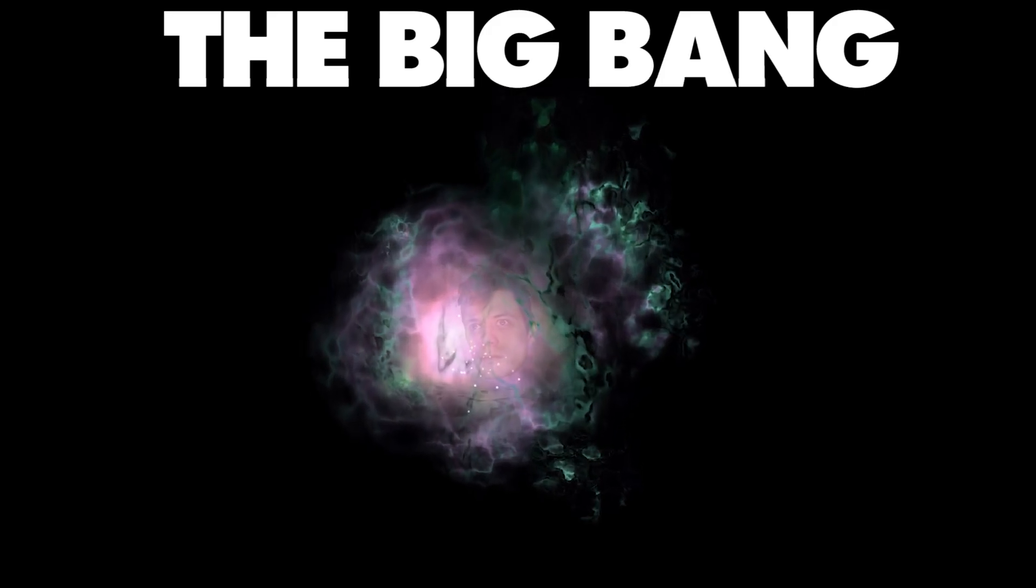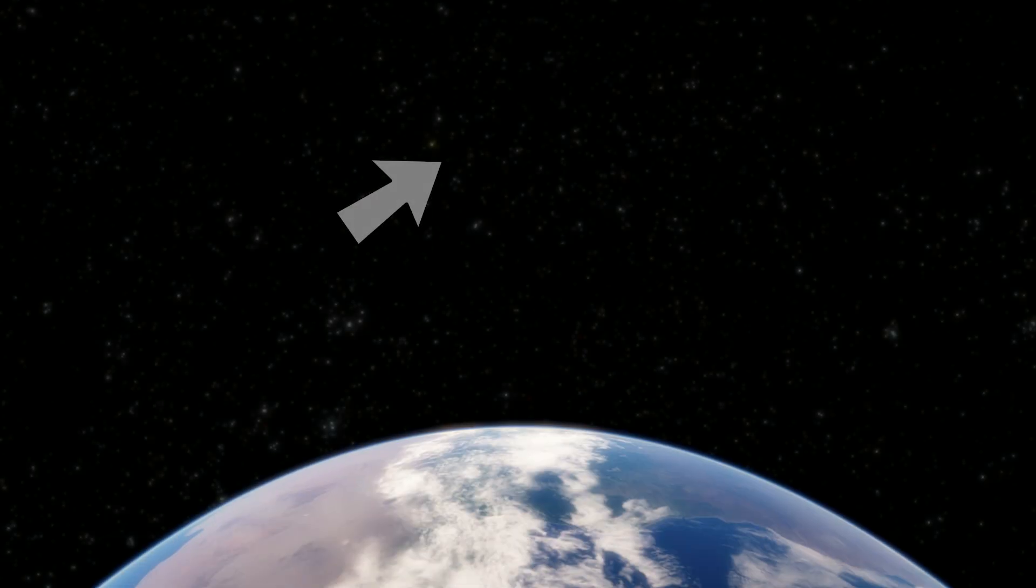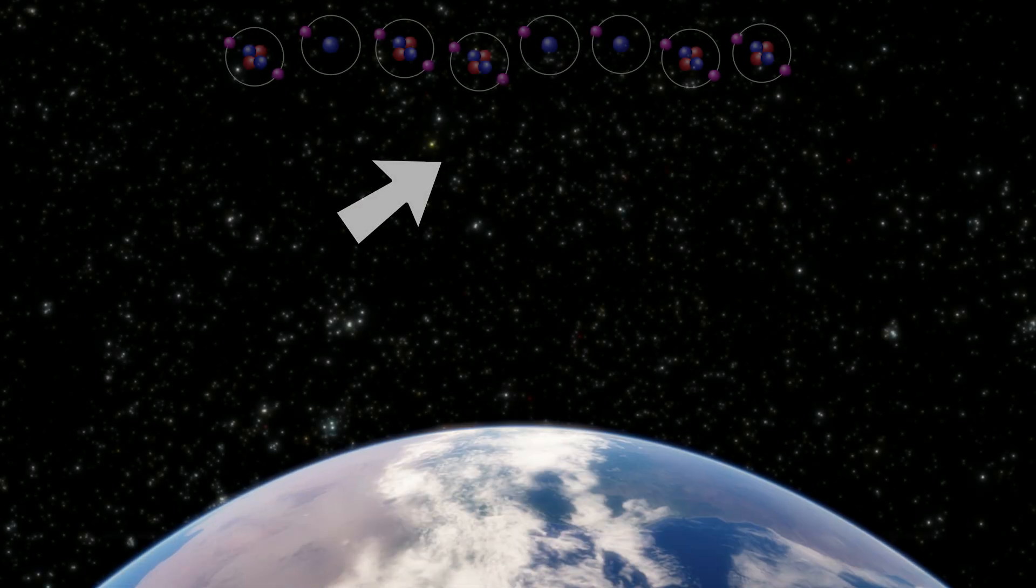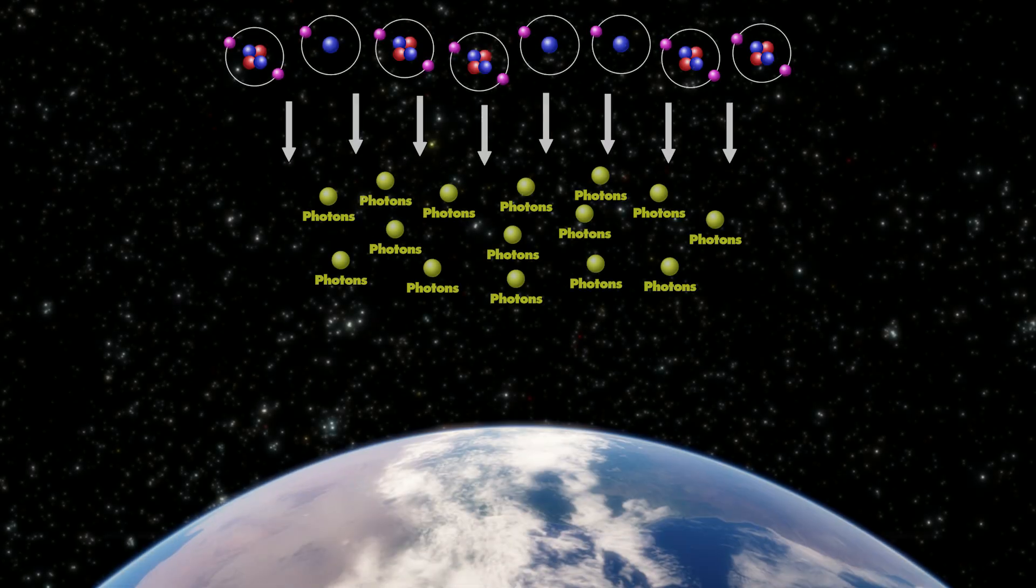So if the big bang actually happened the way I'm describing, surely we can see or detect this imprint in the sky from when all these atoms were made and all these photons were given off. Yeah. You just gotta turn on your TV.